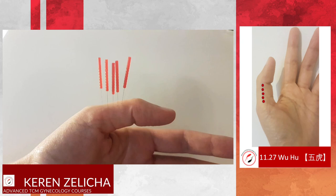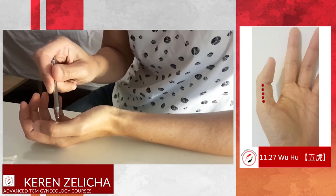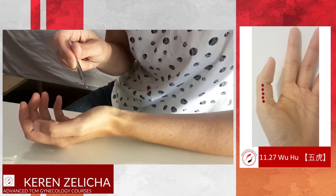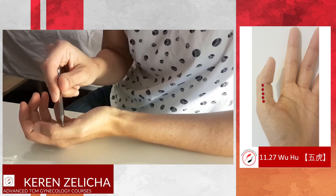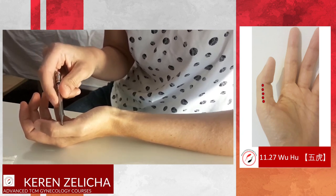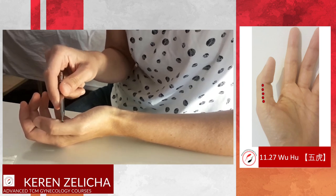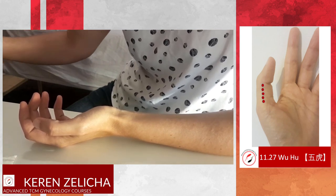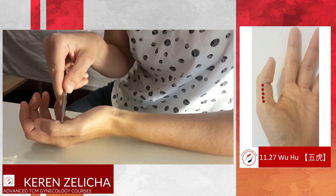The name 'Tiger' reflects the option of treating any bone or any sinew disorders — this is why the name is Five Tigers. When we use Wuhu points, if we have a disorder on any joint in the body, we should remember that Wuhu number one will be treating the upper part of the body.